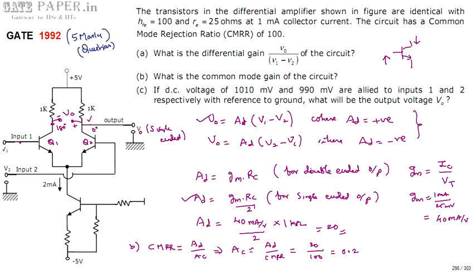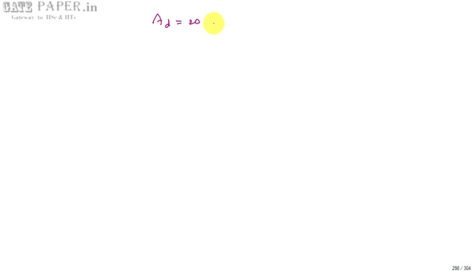So AD = 20 and AC = 0.2. Now we calculate the output voltage V0. The output equation is V0 = AD × VD + AC × VC. For an ideal differential amplifier, V0 = AD × VD only, which is valid when CMRR is infinite. When CMRR is finite (practical case), we must use the full equation V0 = AD × VD + AC × VC.